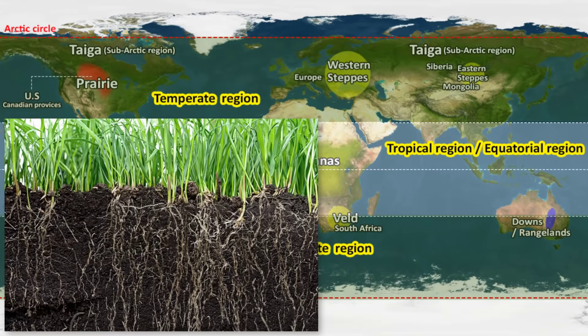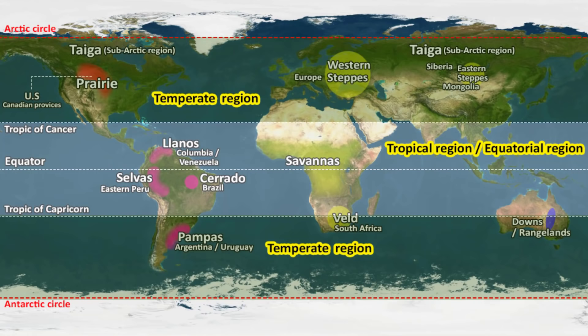The grasses of these grasslands hold the soil firmly in place, which is why erosion is very minimal. The majority of grasslands around the world are found between 40 and 60 degrees north and south of the equator, meaning there are more grasslands in the temperate zone. That is why grasslands in general are also referred to by the name temperate grassland.